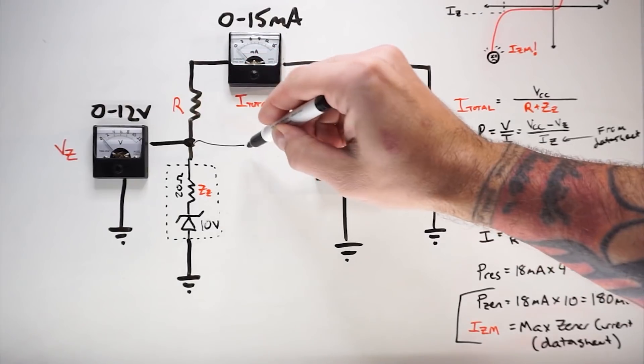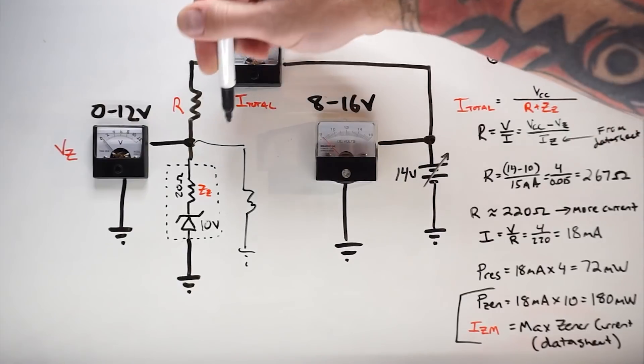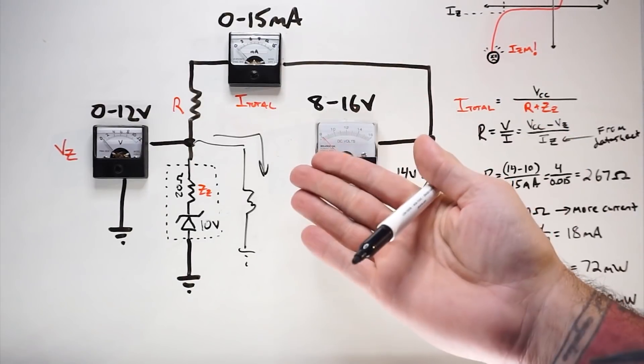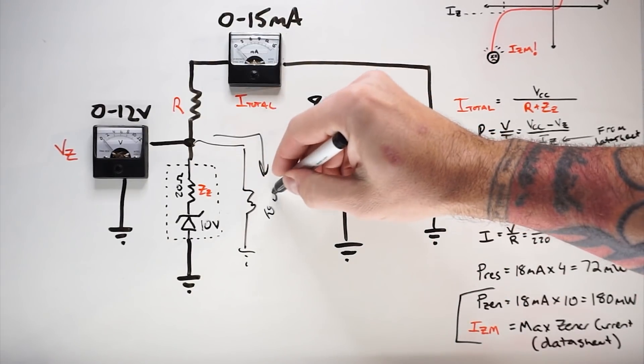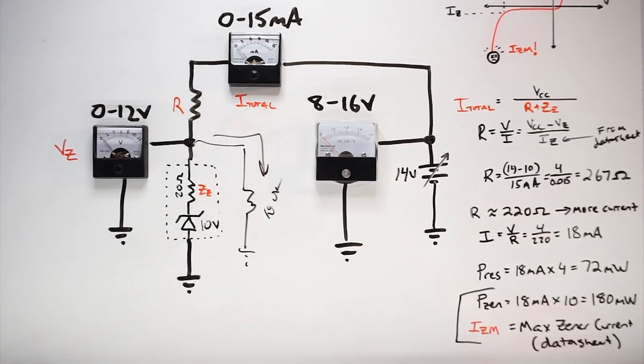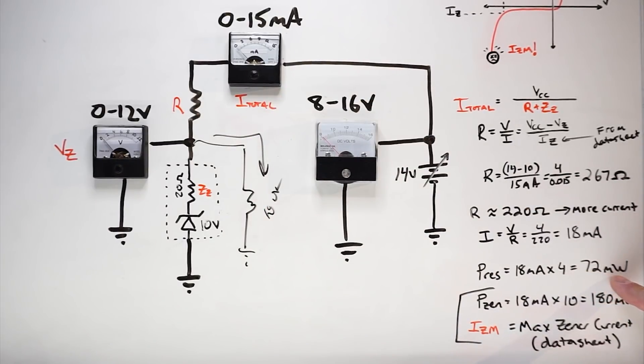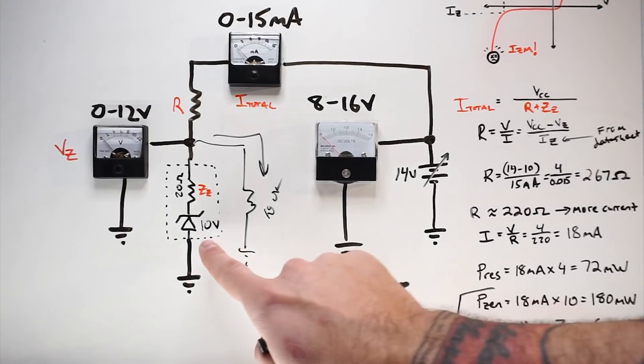Now I may have a load attached to it, and some of that current is going to get diverted here. But typically, this is going to be like you're driving some other thing, like an op amp as a voltage reference, and maybe it'll be 100,000 ohms. So it's really not going to impact this all that much, but I want to make sure that I'm not dissipating too much power. And the power through my resistor is the 18 milliamps times the four volts across it, which equals 72 milliwatts. That's basically nothing. So we can use a quarter watt resistor for that.